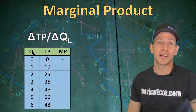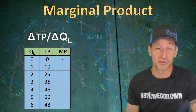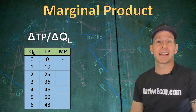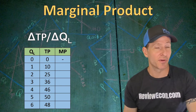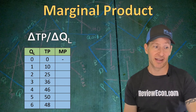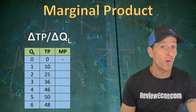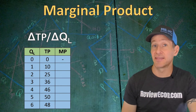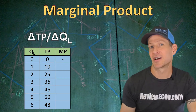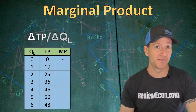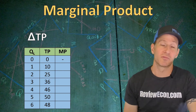In microeconomics, totals are important but marginals are more important, so we're going to look at marginal product. Marginal product is the change in total product divided by the change in the quantity of labor. On this table, the change in quantity of labor is always one, so most of the time on the AP microeconomics exam you won't have to divide by the change in quantity of labor.